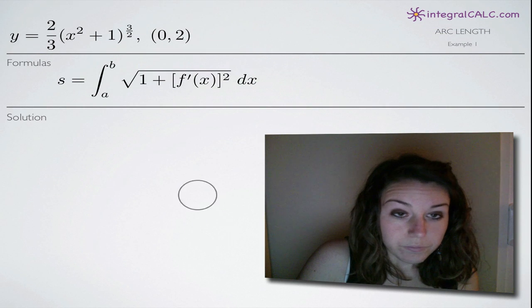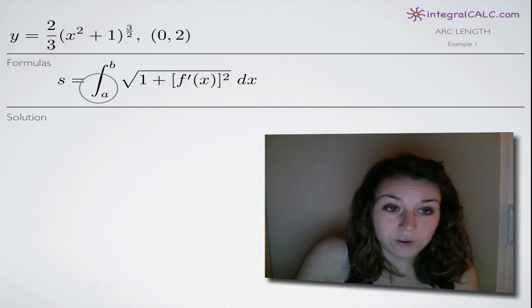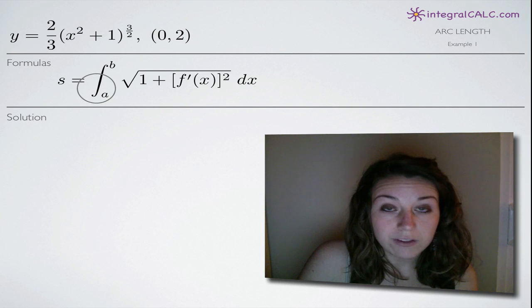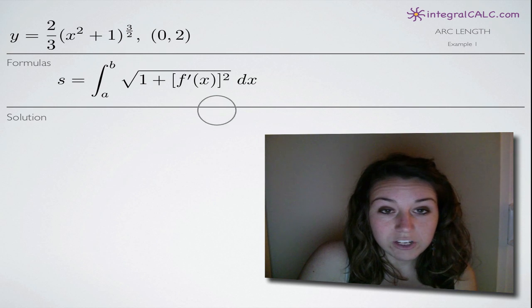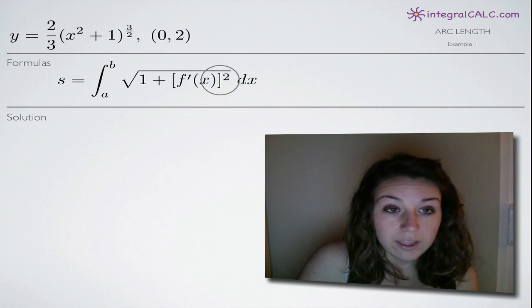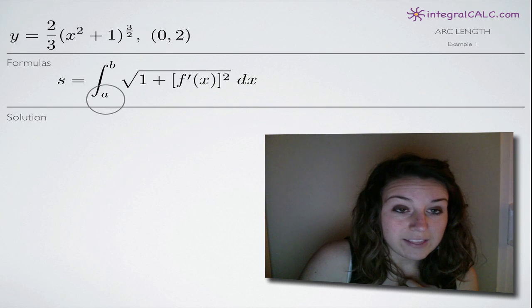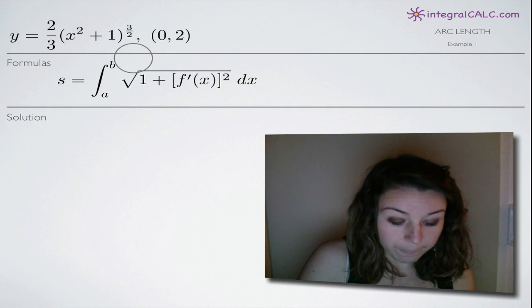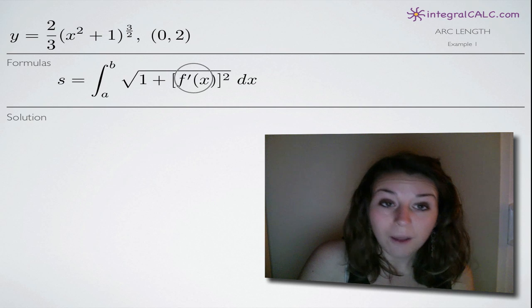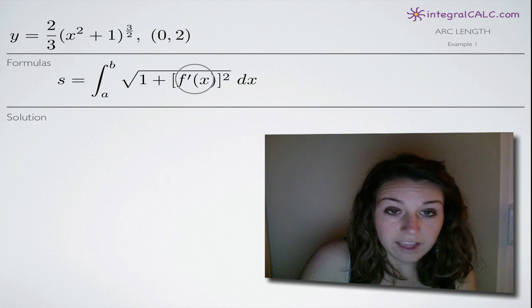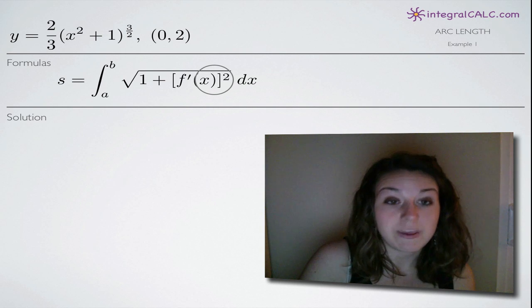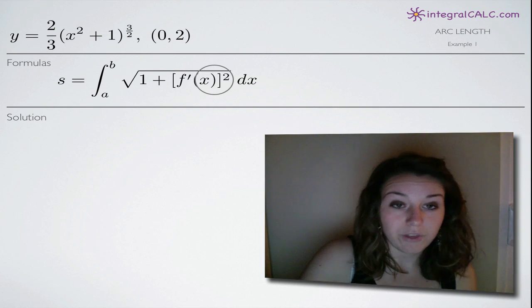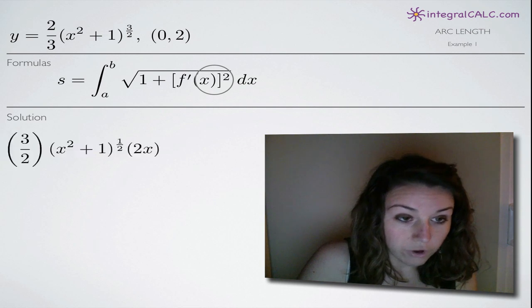The first thing that we're going to do is take a look at the formula that we're going to be using. The formula for calculating arc length in two-dimensional space is the square root of one plus the derivative of the original function f of x squared. And we're going to be evaluating that on a to b, or in other words, zero to two. So using this formula, the most complicated piece of it is this f prime of x squared here. So the first thing that we want to do is calculate that piece so that we can just plug it in along with all of our other information.